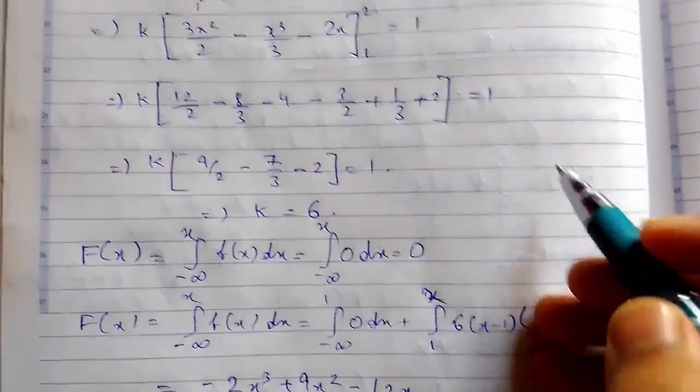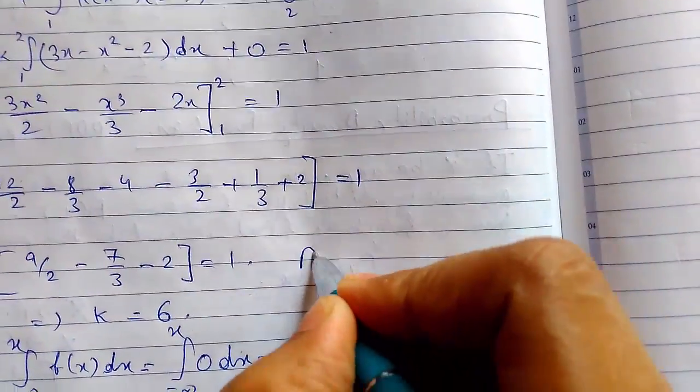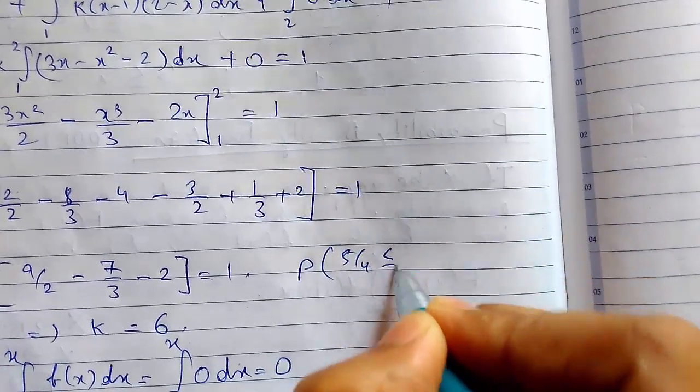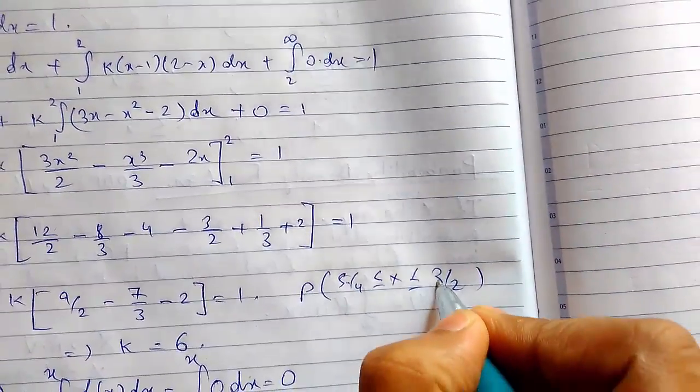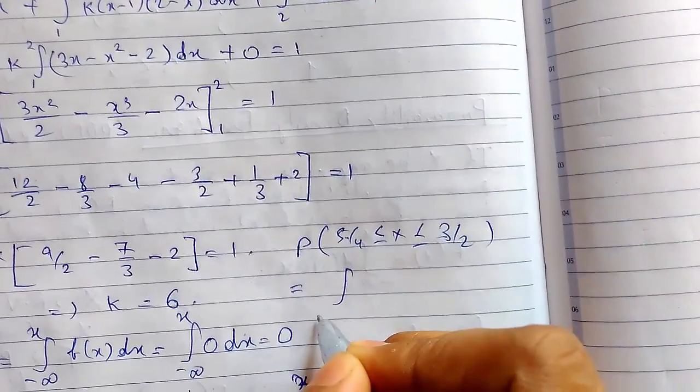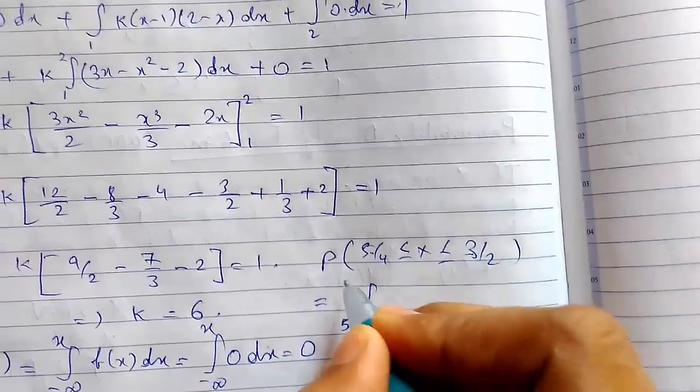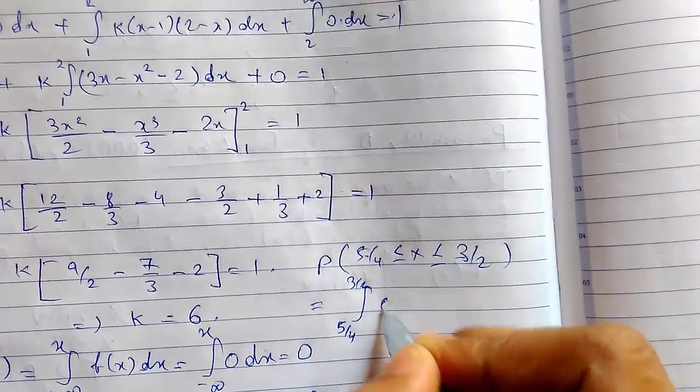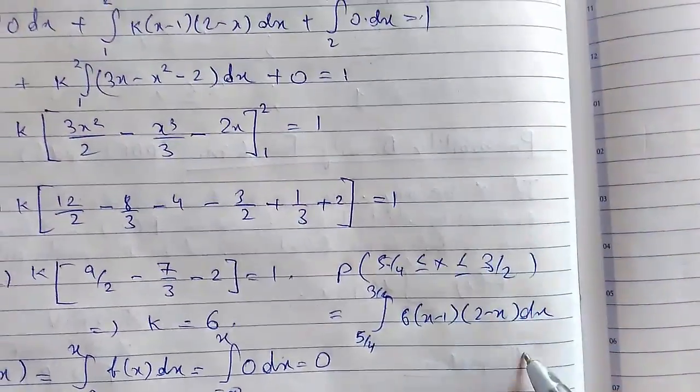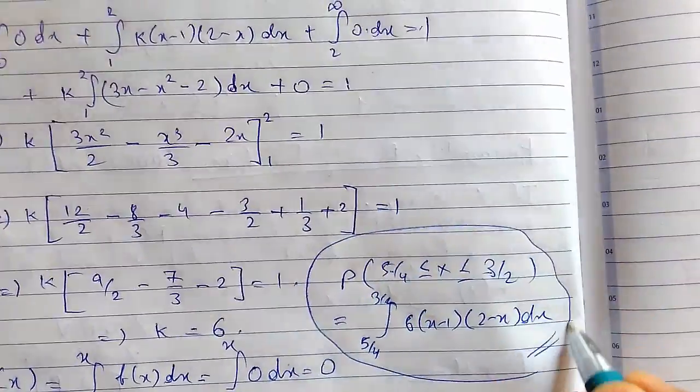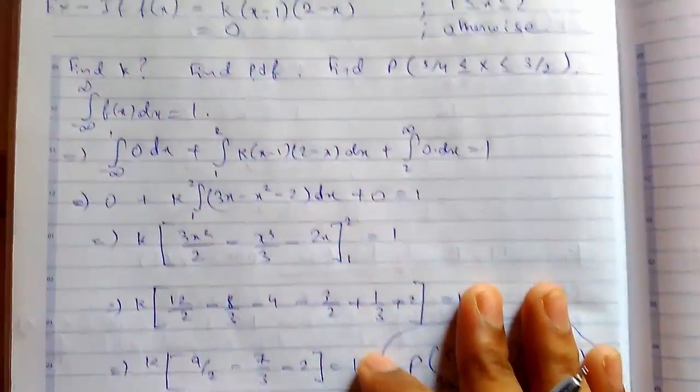And now we need to find this probability. So to find this probability what we will do is simple. We know this value is greater than one and this is less than two. So we will just put the value in the integration form. Solving this integration will give us the answer of this part. So this was all about PDF. Thanks for watching.